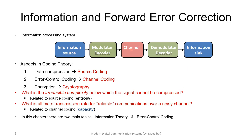Regarding information theory and forward error control, we usually need to know which is which. If we look at an information processing system, we have an information source and an information sink. To go from the source to the sink we go through the channel, and to do that we need to prepare the information using a modulator/demodulator or encoder and decoder.